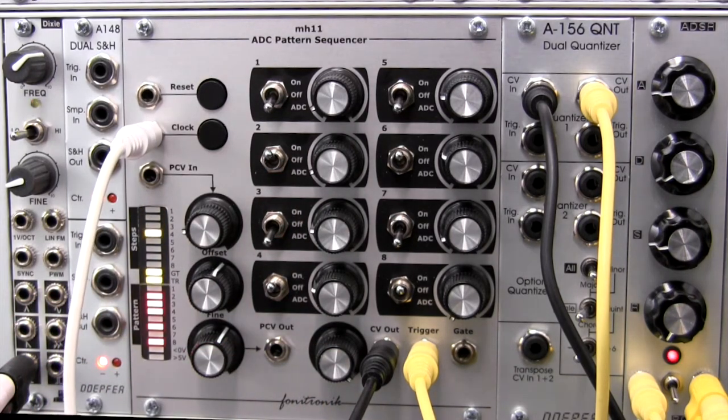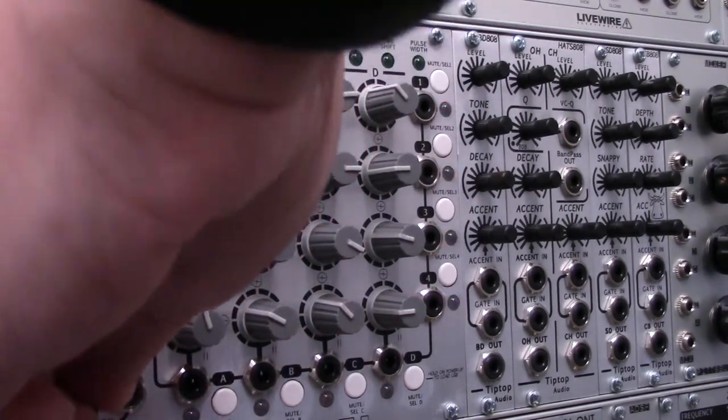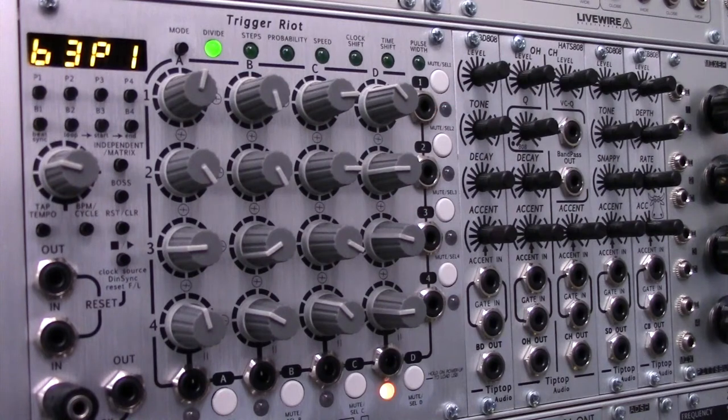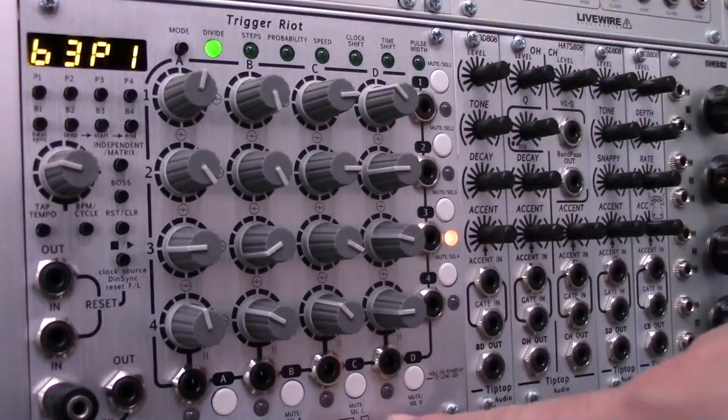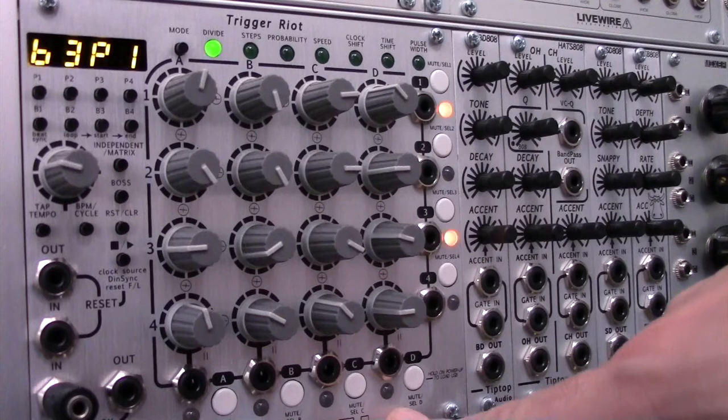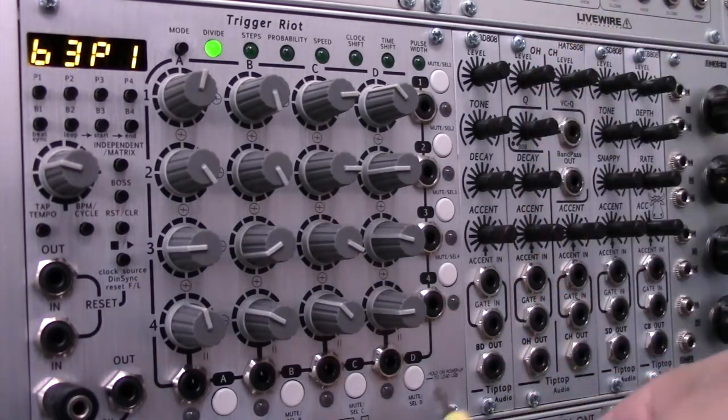And I'm going to feed it up into another section of my modular. And I'm going to trigger the trigger riot up here. And I'm going to actually just use the trigger riot for the moment as a clock divider. So you can see this periodically firing a trigger right here.